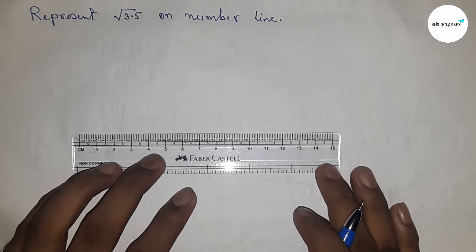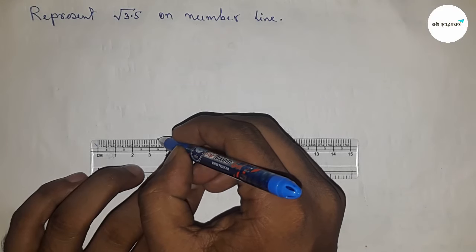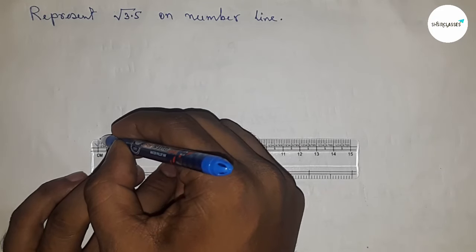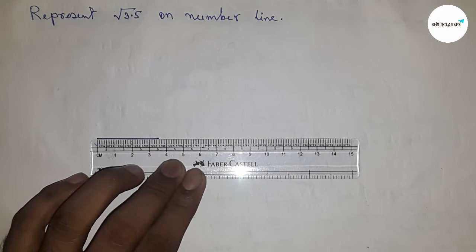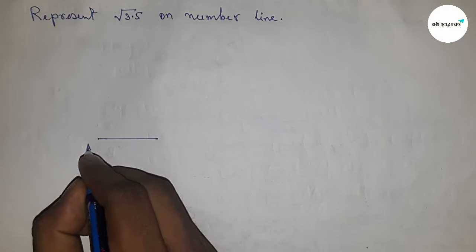So, constructing root 3.5 on a number line. First of all, draw a line of length 3.5 centimeters. This is AB.